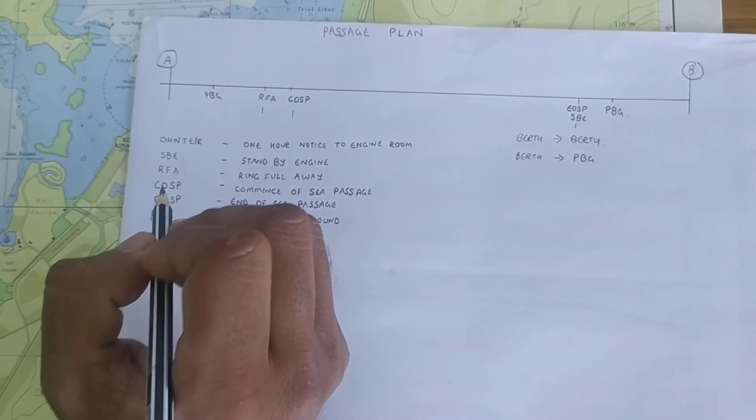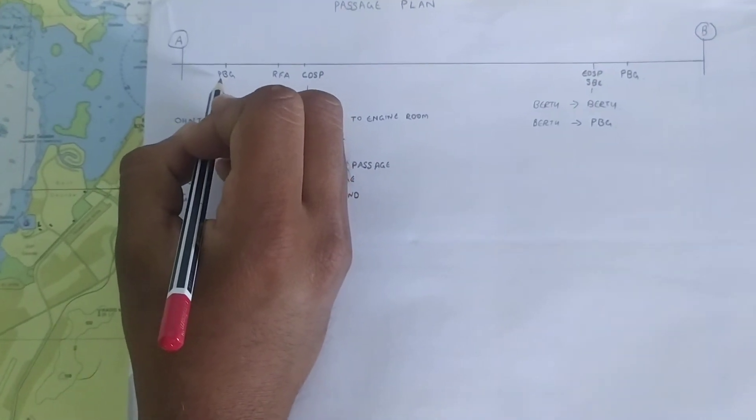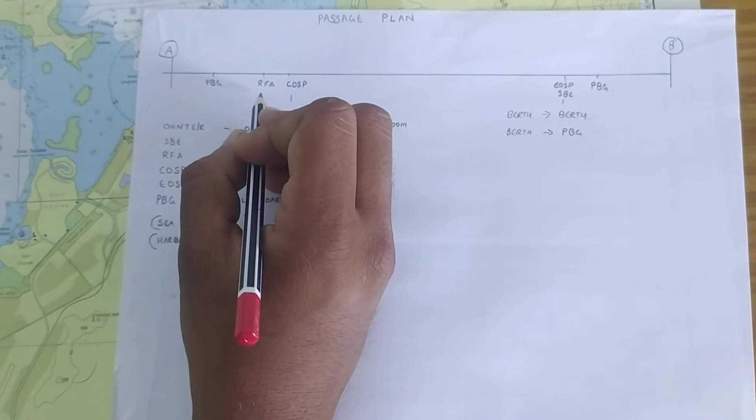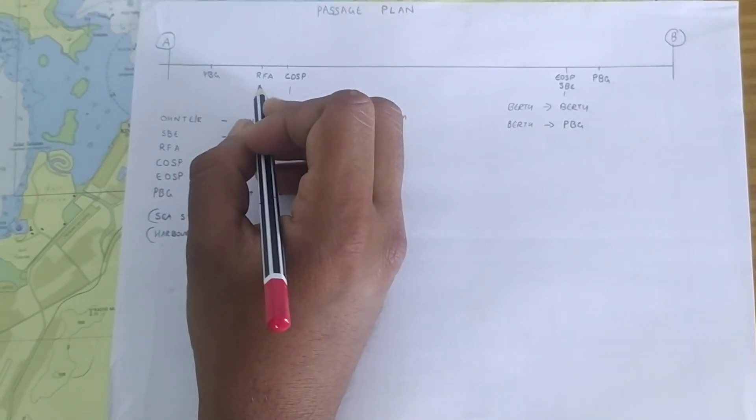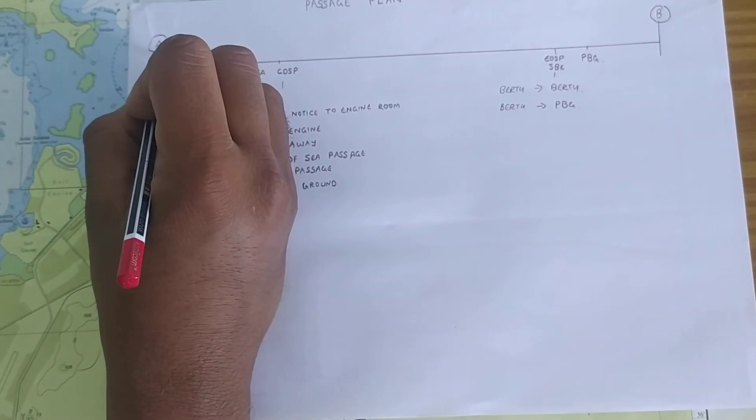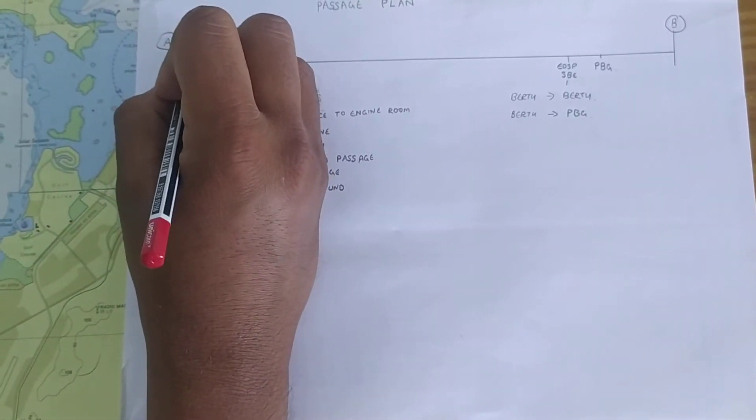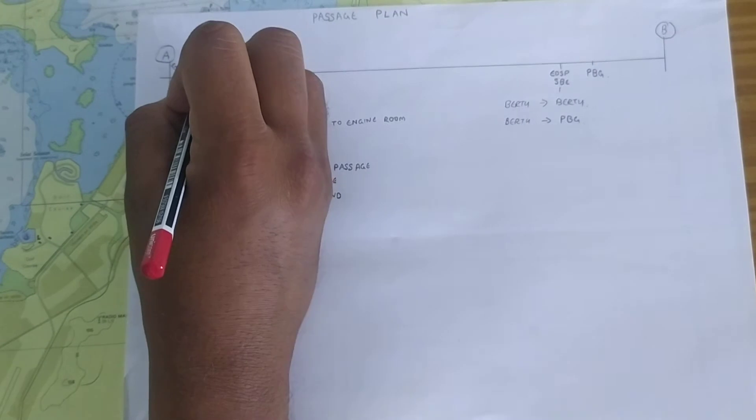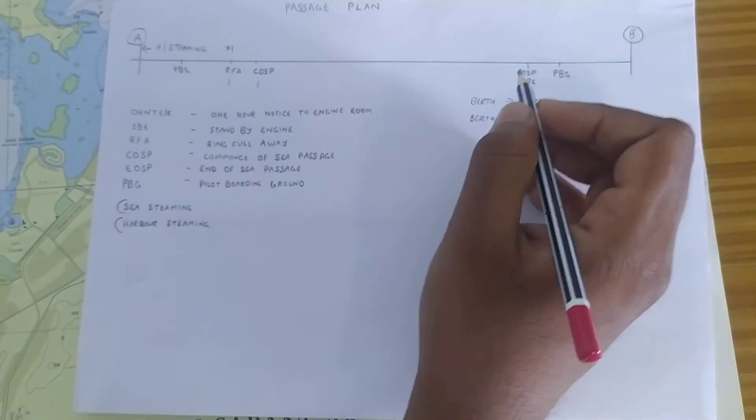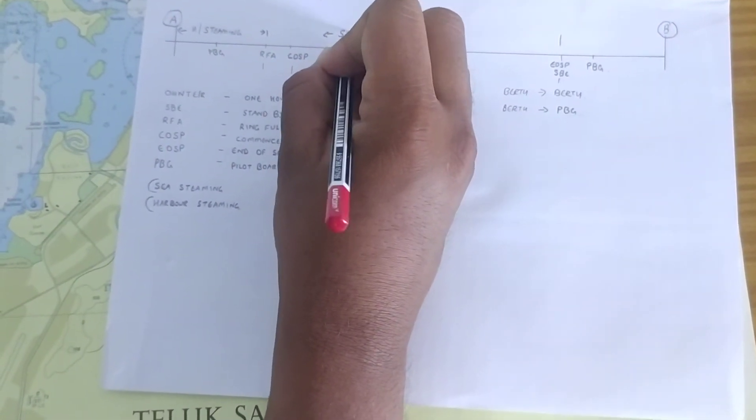Now, how you calculate it is, you start from point A, till the pilot boarding ground, the pilot will be taking your ship away, then starts the RFA. Suppose, take it as RFA is the place where sea steaming starts. So, this total distance comes under harbour steaming. Then, from RFA to end of sea passage, this is sea steaming.